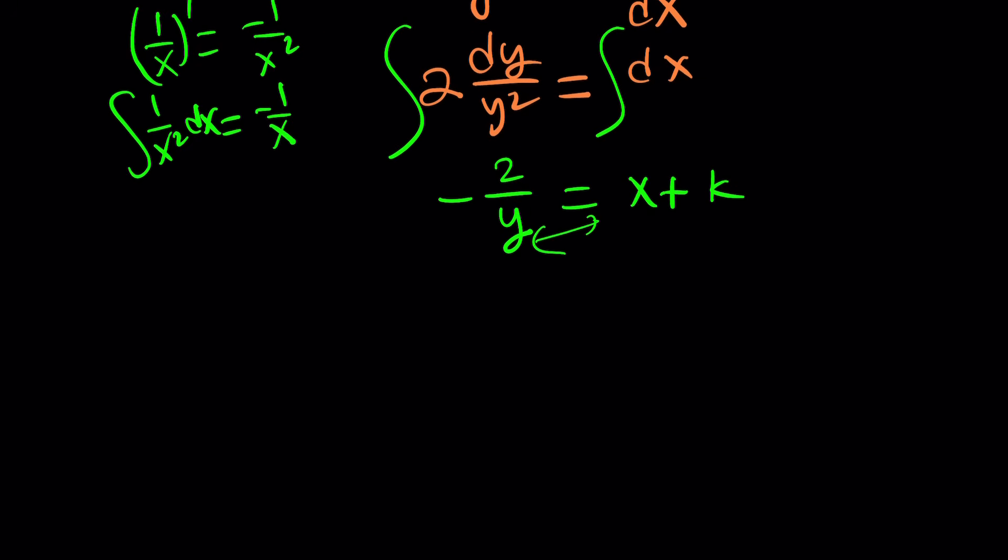So now from here let's try to solve for y. Easy. Cross cancel. Crisscross applesauce. You're going to get y equals negative 2 divided by x plus k, where k is a constant. So for c equals 0 we get a nice solution.